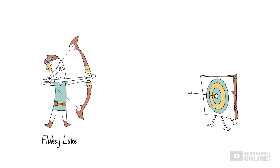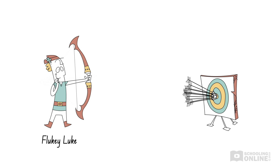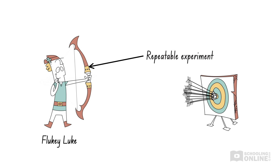He launches a second and third arrow. Wow — he empties a full quiver of arrows and hits the bullseye every time. The magical bow represents a repeatable experimental procedure, as Fluky Luke achieved consistent results. That is, the magical bow produced similar results when used by the original investigator with the same method and equipment.